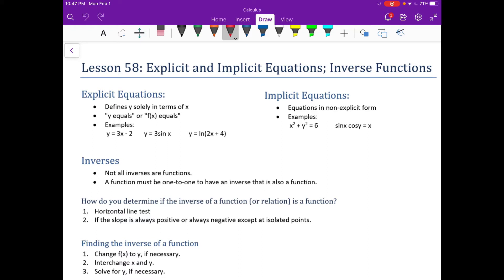Implicit equations are equations that are not in explicit form. We have a circle there, x squared plus y squared equals 6, and then we have this unique equation, sine x times cosine y is equal to x.